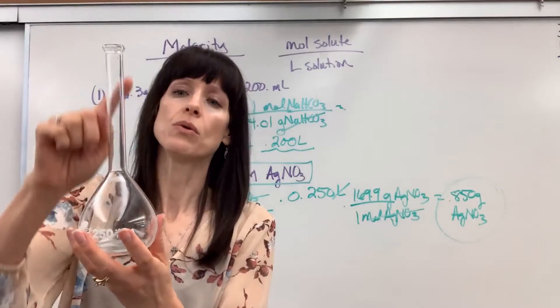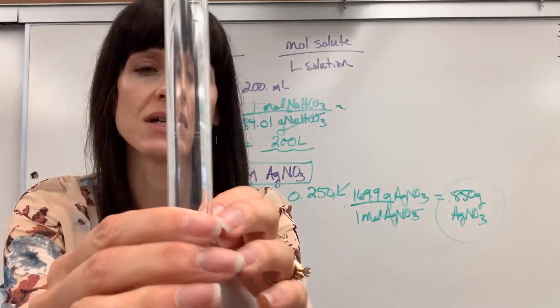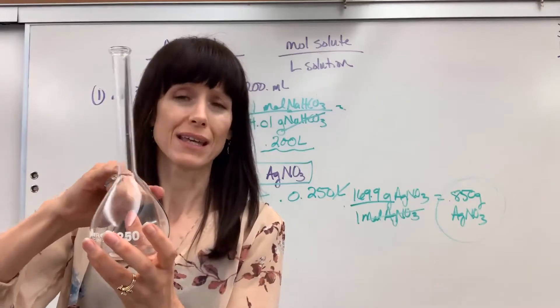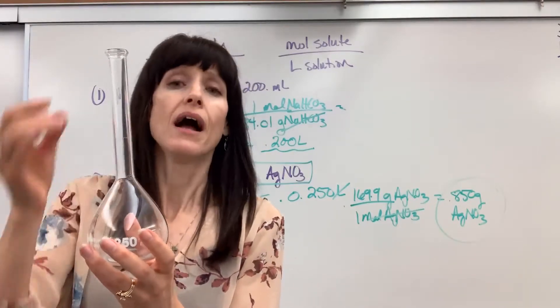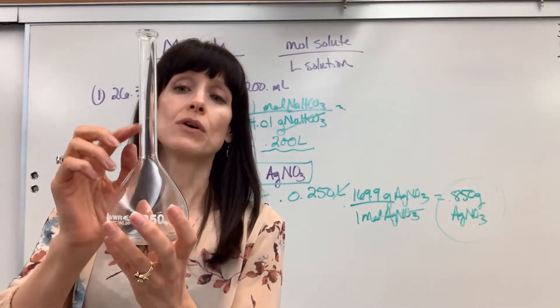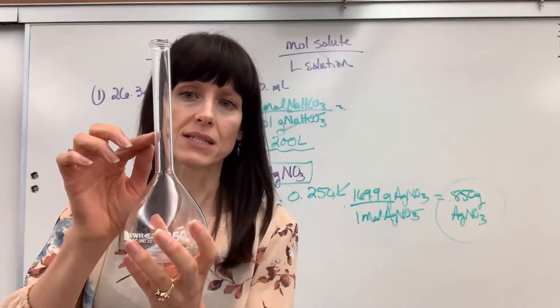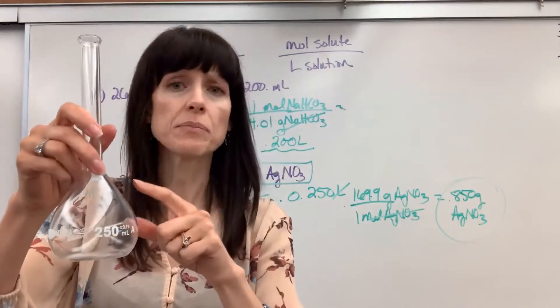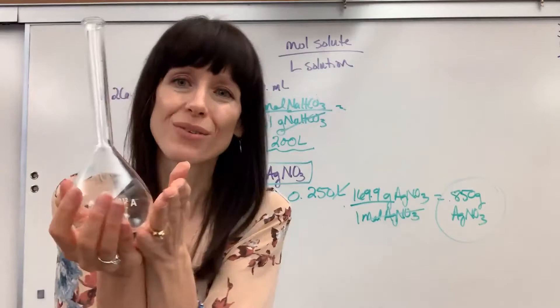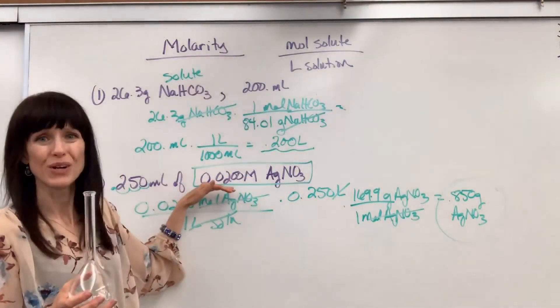Once it's dissolved, then you add the water to that line right there. You can barely see it. That is called bringing it to volume. Now what I do is I usually will add the water until I get to the skinny part of the neck and then I'll get a dropper and I drop, drop, drop, drop so that I can hit the meniscus right at that line. If you go above the line, there's nothing you can do but just start over. So you want the meniscus to hit right there and then perfect. I added 0.85 grams of the silver nitrate, brought it to volume to 250 mils. And guess what? That concentration is the 0.02 molar.